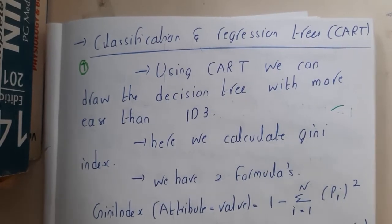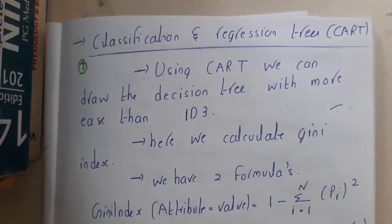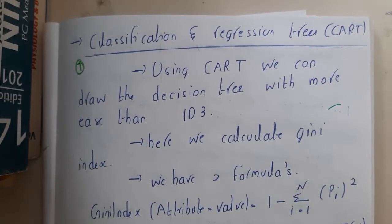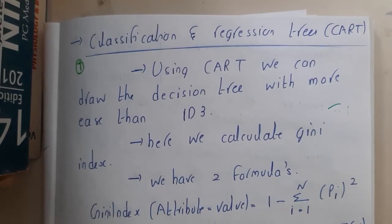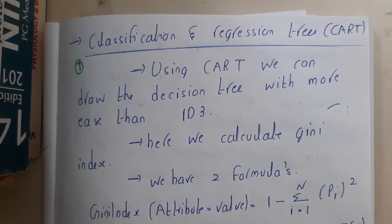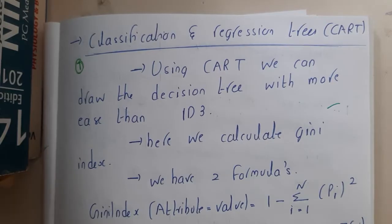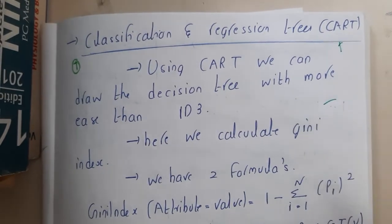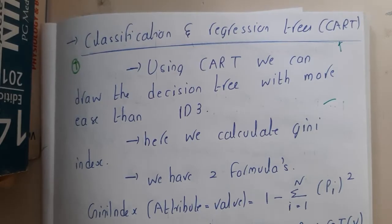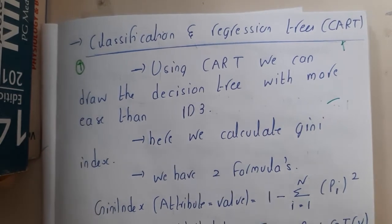Hello guys, welcome back to our next lecture. In this lecture, let us go through Classification and Regression Trees (CART) — that is a method using which you can solve decision trees. One thing you should remember: if the question says to solve using ID3, please follow the ID3 method only. If it is not mentioned, I suggest you use this method because it is a better approach to solve decision trees.